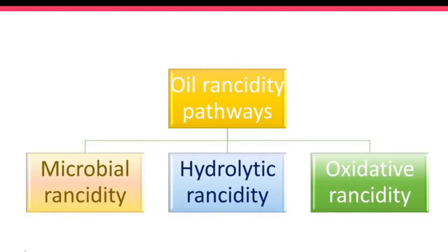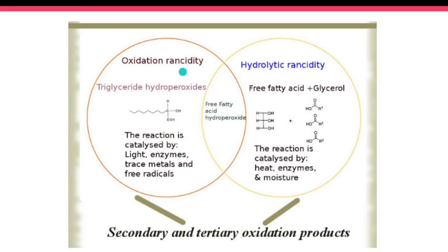Look at the oil rancidity pathways, for example. Oils usually become rancid by a combination of three pathways: microbial rancidity caused by microorganisms, hydrolytic rancidity, and oxidative rancidity. When you bind the metal ions, you are deactivating the microorganisms and enhancing the stability of the oil. For oxidative rancidity, one of the catalysts are metal ions, trace metals, and free radicals. So by using a chelator that binds metal ions and acts as an antioxidant and free radical scavenger, you enhance the stability of your oils and slow down oxidative rancidity.